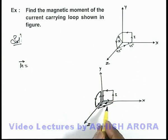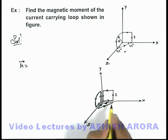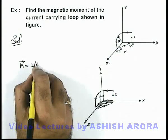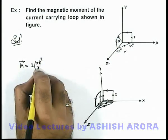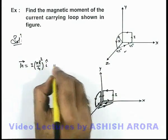For all the three we need to add up, because adding up the three loops we are getting the original loop. In this situation, for this quarter circle we can write magnetic moment is current multiplied by pi r square by 4, and its magnetic moment is in x direction so it is i-cap plus